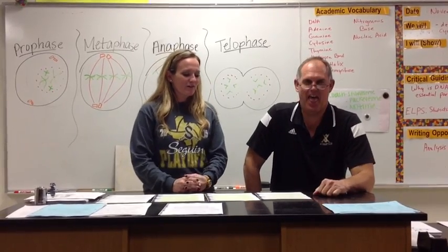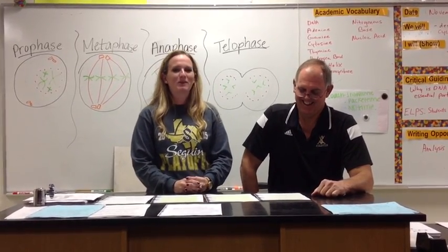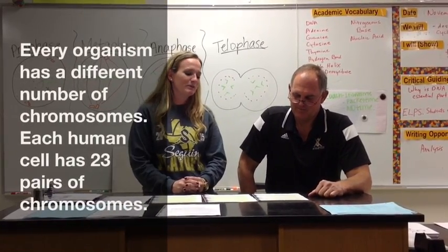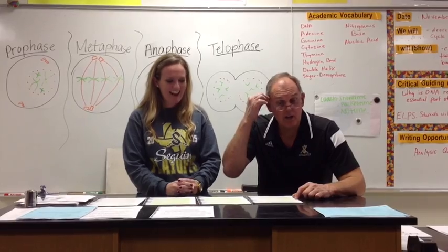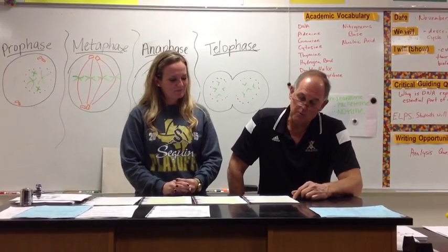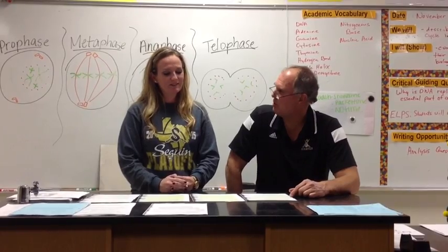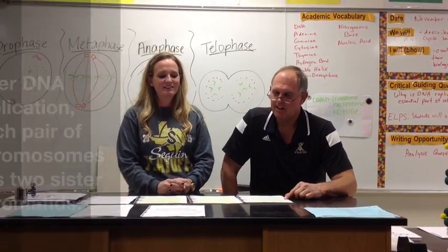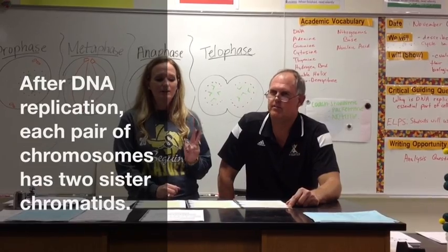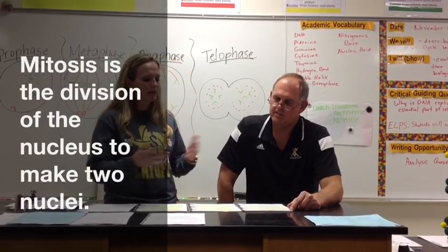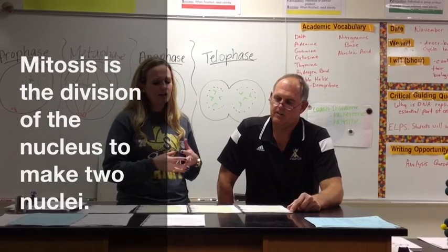Exactly. Now every organism has a different number of chromosomes. We're going to use humans as an example. Each human cell has 23 pairs of chromosomes. So an 85-year-old man and a newborn baby both have cells with 23 pairs of chromosomes. Now each pair of chromosomes has two chromatids. The big idea to remember is that mitosis is the simple duplication of a cell and all of its parts.